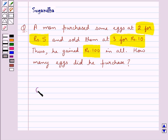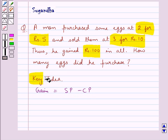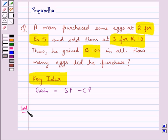We know that gain is equal to the selling price SP minus the cost price CP. This is the key idea to be used for this question. Now let's move on to the solution.